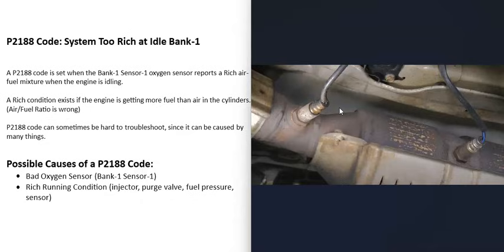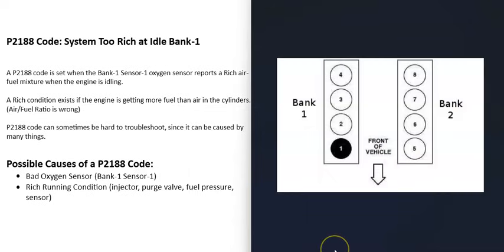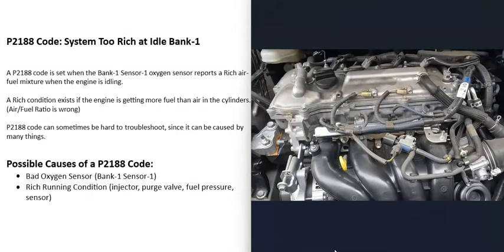Running rich means there's more gas than air going into the cylinders, and this is mainly happening when the engine is idling. If you have a V6 or V8 engine, the engine will have two banks. Bank 1 is always the side of the engine with the number one cylinder — you can Google your engine's cylinder location to find it. The opposite side is Bank 2. If you have a four-cylinder engine, there will only be one bank.